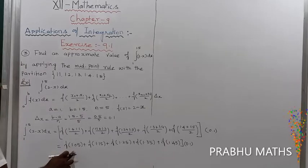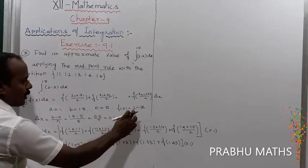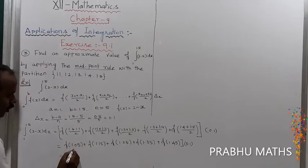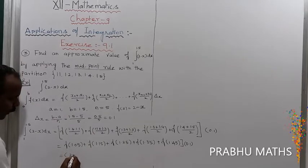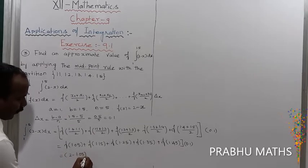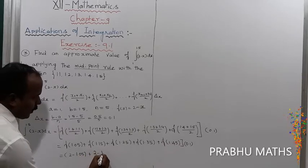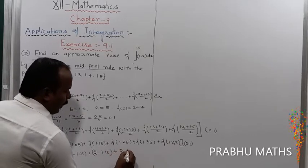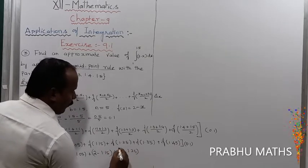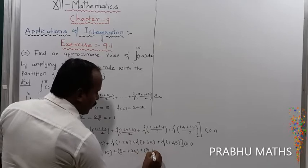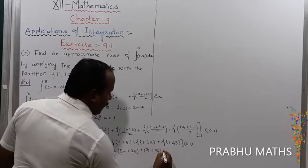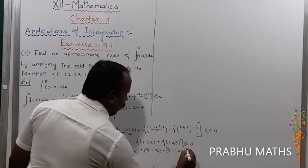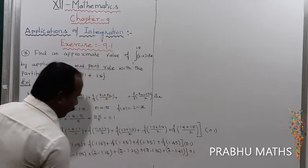Now f(x) equals 2 minus x. So substituting: 2 minus 1.05, plus 2 minus 1.15, plus 2 minus 1.25, plus 2 minus 1.35, plus 2 minus 1.45, into 0.1.